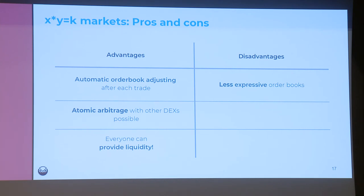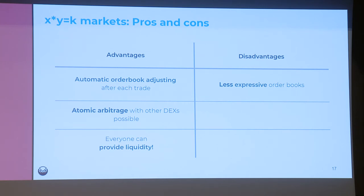These markets are super cool because they have automatic order book adjustment — when a trade happens, the point on the curve changes and the order book adjusts automatically. There is also automatic trading, and one of the coolest features is that everyone can provide liquidity to these markets by simply making deposits and automatically gaining a portion of the fees. The disadvantage is that these order books are usually a little less expressive than limit order books.